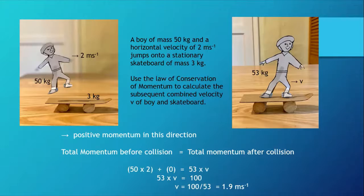We're asked to use the law of conservation of momentum to calculate the subsequent combined velocity v of the boy and the skateboard together as one combined mass. It's very useful in questions like this to take some direction as being positive. Remember, momentum is a vector quantity. I've taken left to right as being the direction for anything that has positive momentum.